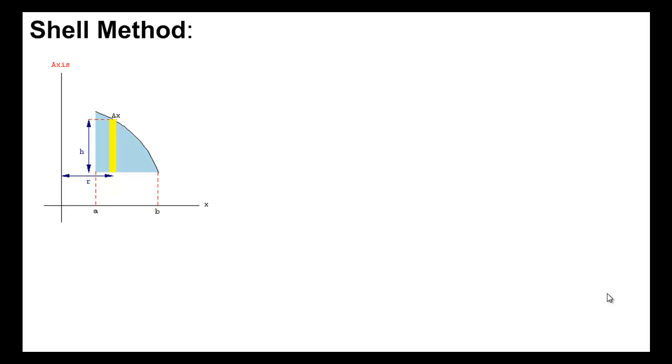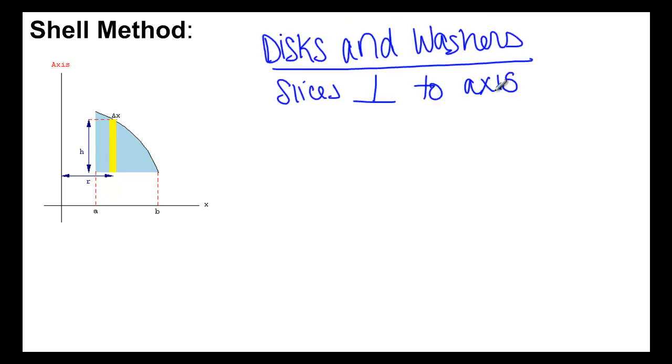But now that we're talking about volumes of revolution, we currently only have a method that will work if you're integrating with slices perpendicular to the axis of revolution. So what would happen if we wanted to take slices or rectangles parallel to the axis of revolution? Would we be able to find volume that way? The answer is yes.